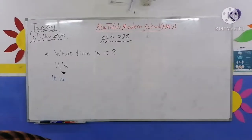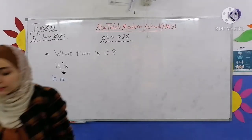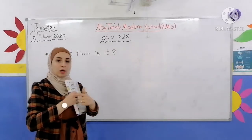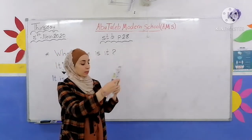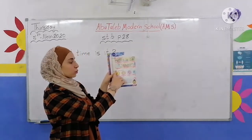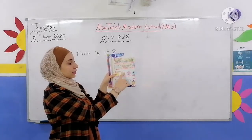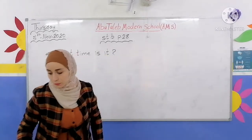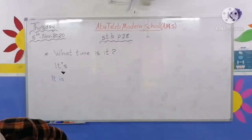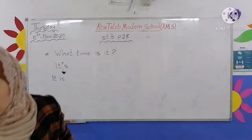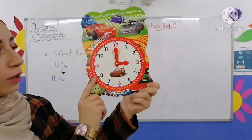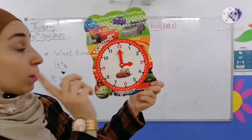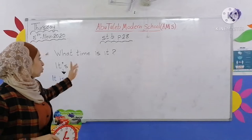Today we're going to explain how to ask about the time — how to ask about the time. Exercise two, look, listen and say. We have here a clock — look here.